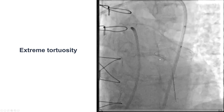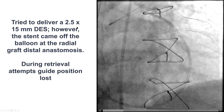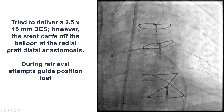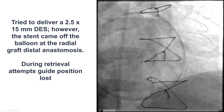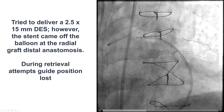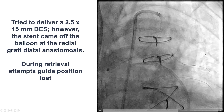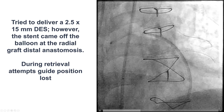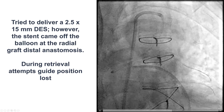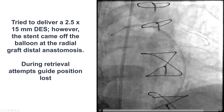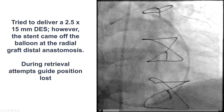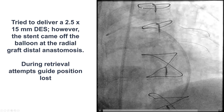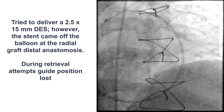You can see the extreme tortuosity. We tried to deliver a 2.5 by 15 mm drug-eluting stent, but unfortunately we could not deliver it. When we were trying to get it back into the guide, the stent came off the balloon and was located at the distal anastomosis of the radial graft. It was a Resolute stent, and those stents are a little harder to see on fluoroscopy. We tried to retrieve it, and actually lost our guide position — the guide was flying out.